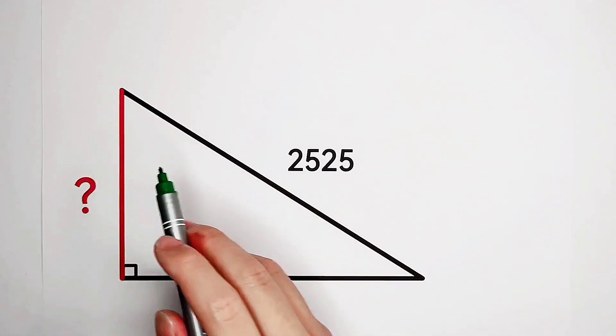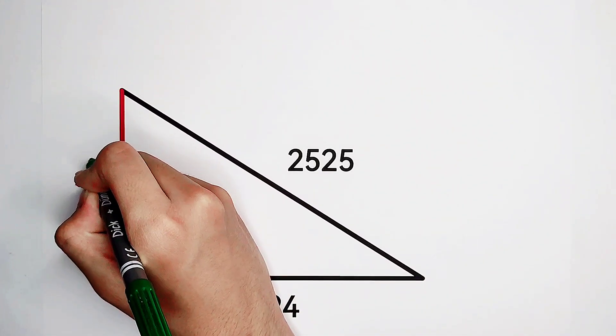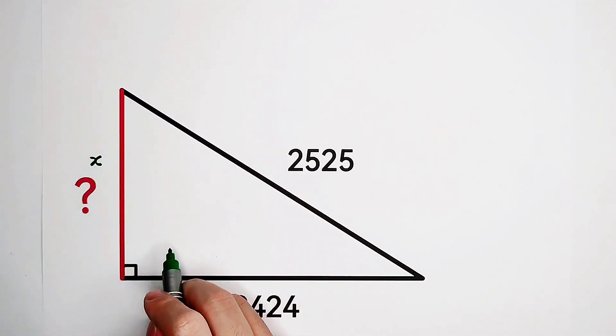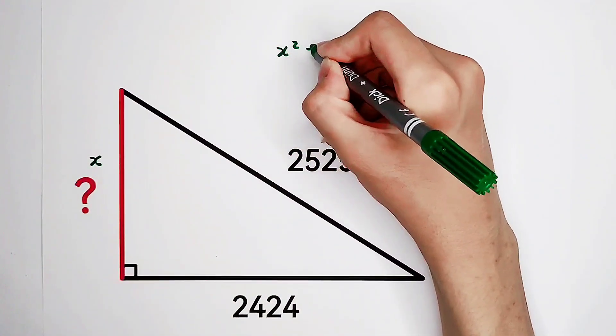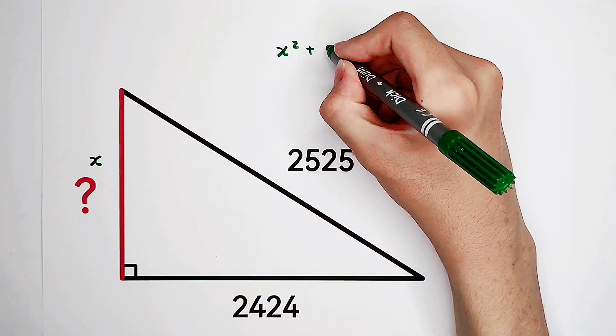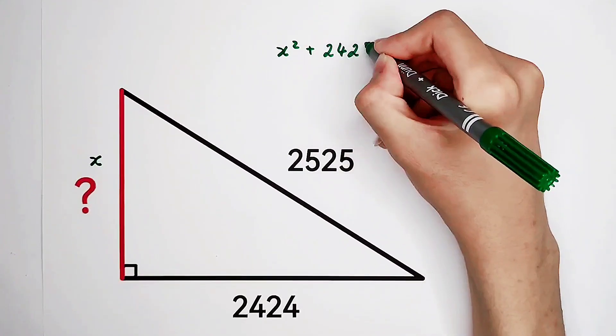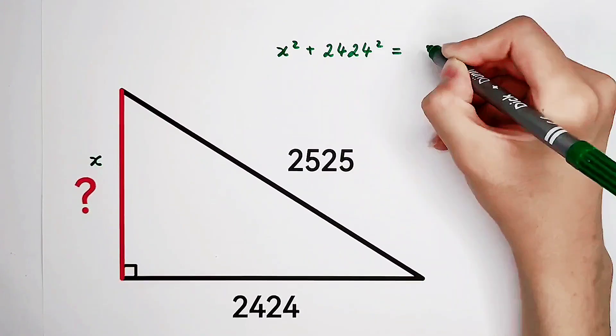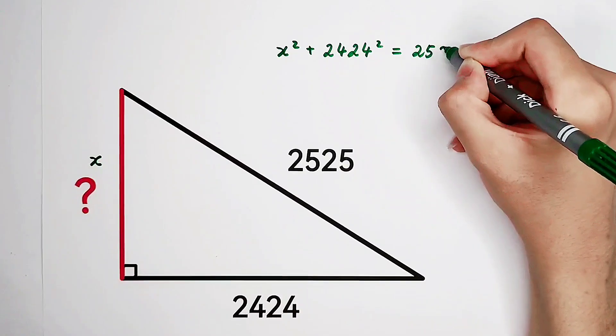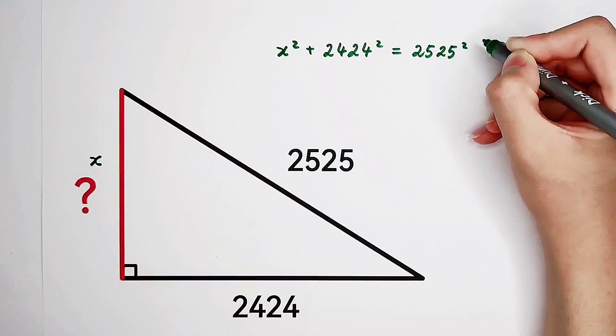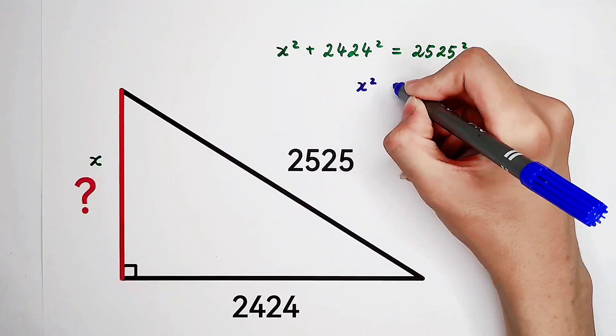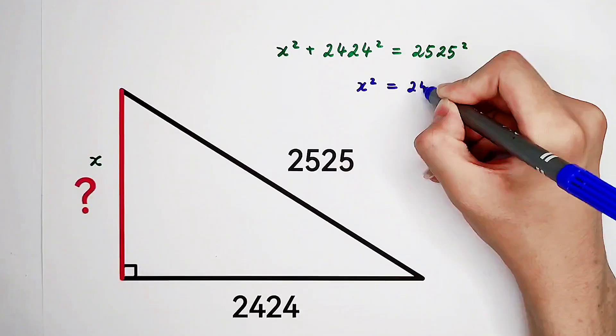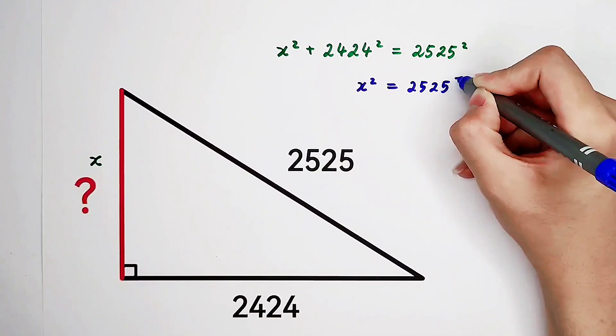We have, for example, I note this side as x. We have x squared plus 2424 squared equals the hypotenuse 2525 squared. So that means x squared equals 2525 squared minus 2424 squared.